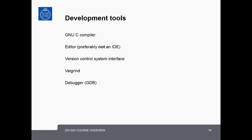You will need the following development tools for this course. First and most importantly, you will need the GNU C compiler. Next, you will need a text editor — we prefer you do not use an IDE because it hides aspects of compiling and linking we want you to understand. You will also need a version control system interface to check your code into the course repository. Valgrind is a memory checker to ensure your code has no memory leaks, and finally you will need a debugger such as GDB.